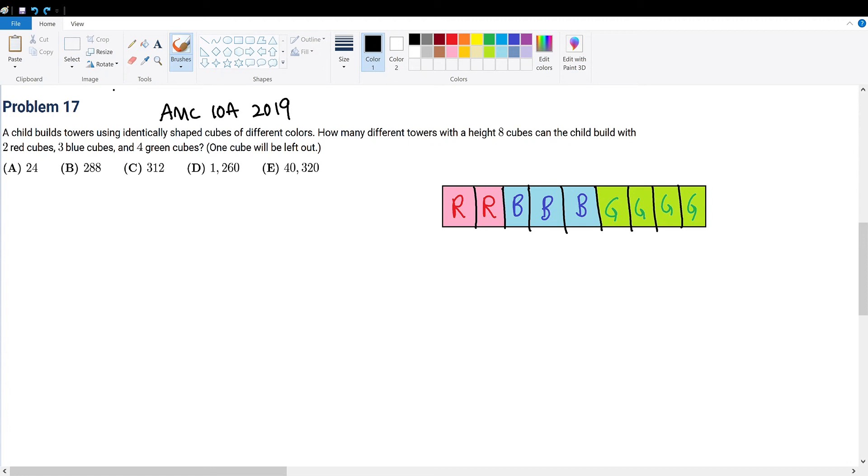AMC 10A 2019 problem 17. We have this child building a tower using 8 cubes of the 9 cubes that he has, which are 2 red, 3 blue, and 4 green. We're trying to find how many distinct possibilities there are for distinct towers.